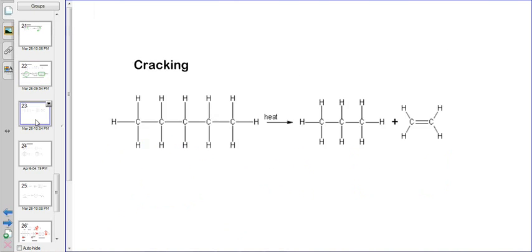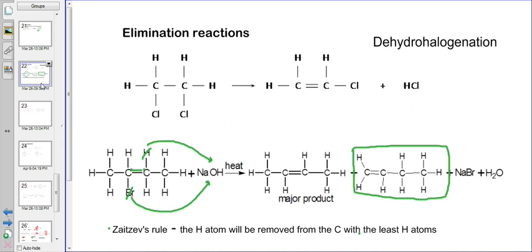Another elimination reaction we can have is known as cracking. What happens is we have a long carbon chain organic compound, and under heat we see that it can break up to form ethene as one of the products, along with a smaller carbon chain. So we see that the longer chain is broken up into smaller chains. Cracking is when longer carbon chains are broken up into smaller chains, and an elimination reaction has taken place because the hydrogens are eliminated. Those are just some aspects to consider when looking at elimination reactions in contrast to addition reactions.